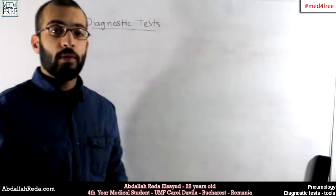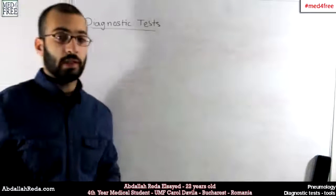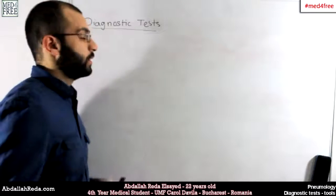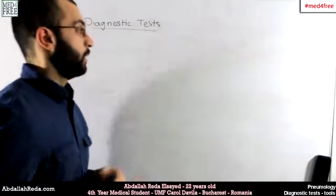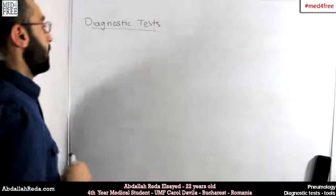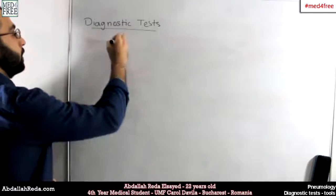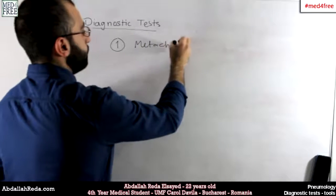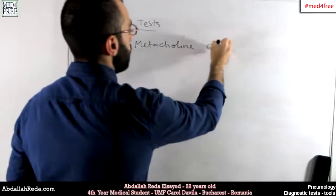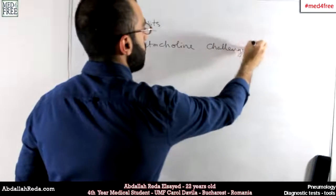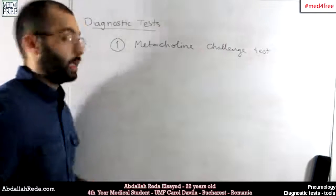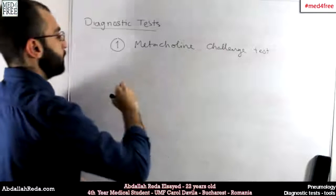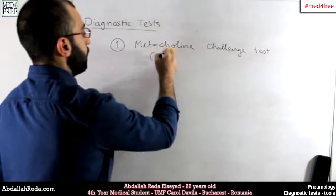Hey everyone and welcome back. Today we're going to talk about the diagnostic tests that we use in order to diagnose obstructive and restrictive diseases. The first test that we're going to talk about is called the methacholine challenge test, and we use that for patients with asthma.